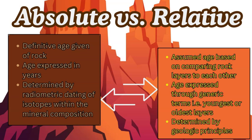This is more of an exact calculation, whereas the more observation-based approach is relative age dating. You can use geologic principles like superposition, uniformitarianism, horizontality, lateral continuity, cross-cutting relationships, and inclusions.